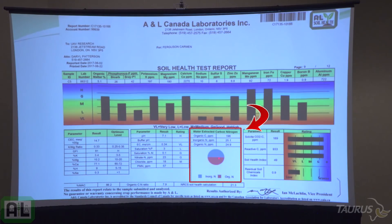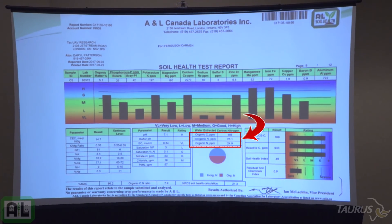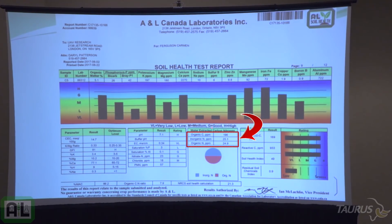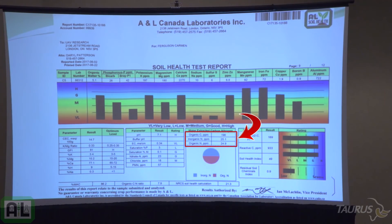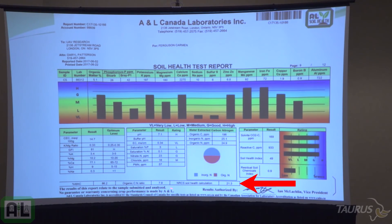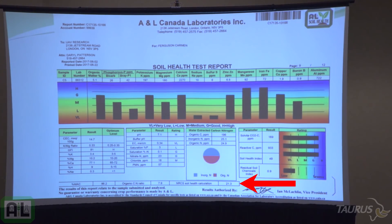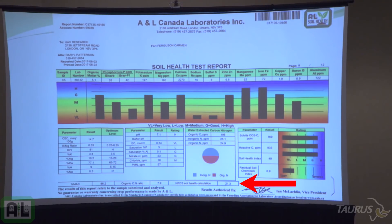This part of the report is our water-extracted carbon nitrogen. The Haney test is based on these numbers, so we can include these numbers for you if you want them, and these calculations are based on the NRC-S soil health test. The reason we put those there is if you want to compare it to some of the work you've been doing earlier on, now you have numbers that you can compare.